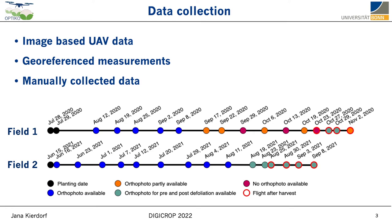The first is image-based UAV data, which is dense and given in high resolution. Additionally, we geo-reference our image data to locate the images globally in space. The third source is manually collected data in the field. These are direct measurements of, for example, phenotypic traits and the development state. It's sparse because it's labor-intensive, but it's very precise.